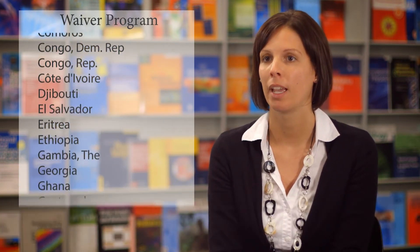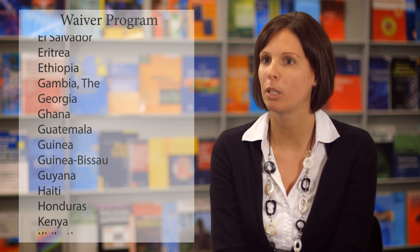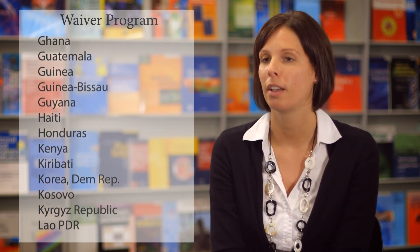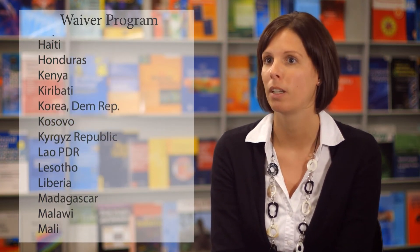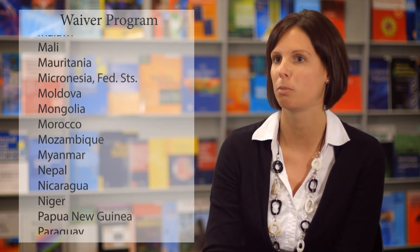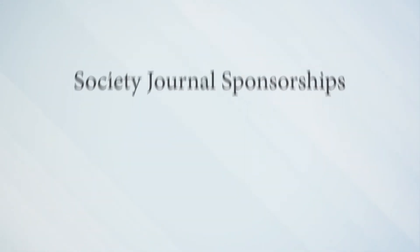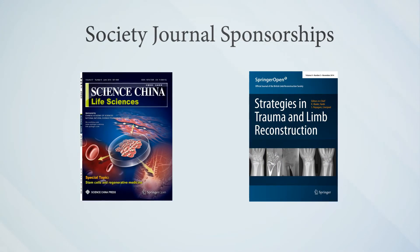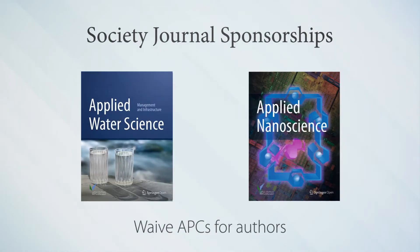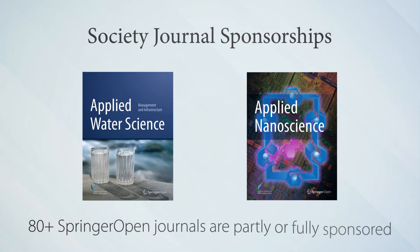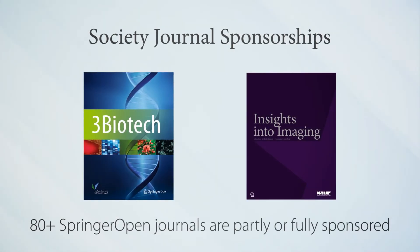We also have a dedicated waiver team, so essentially every author can apply for a waiver, and our waiver team will decide on a case-by-case basis whether that author gets a discount or can publish for free. There are also journal sponsorships where a society or institution with its own journal may offer to waive APCs for authors. Currently over 80 Springer Open journals are partly or fully sponsored.